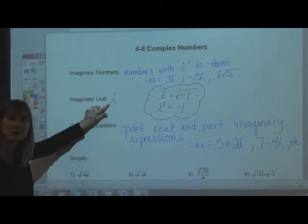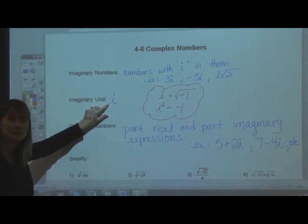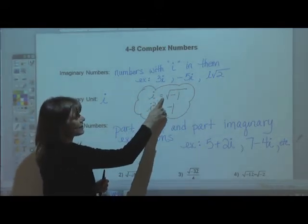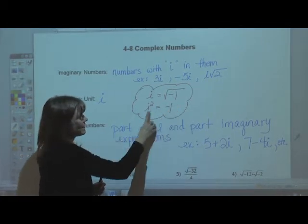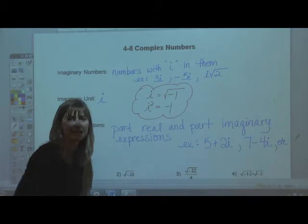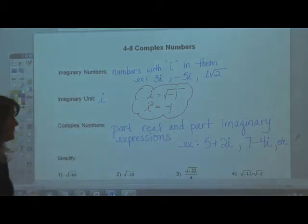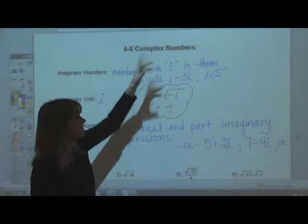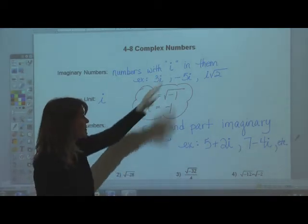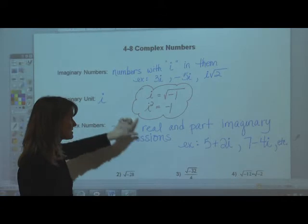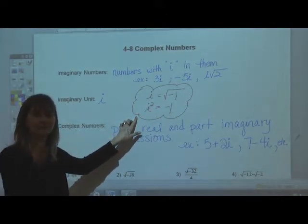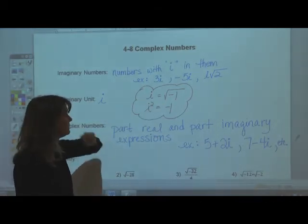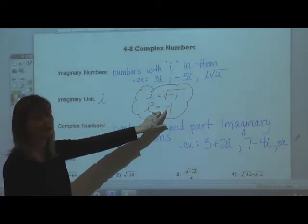The imaginary unit is just the letter i. Now i means two things and you want to commit these to memory: i equals the square root of negative 1, and i squared is equal to negative 1. It's just easier if you commit that to memory. Imaginary numbers are numbers with i in them. The i gets there because negative 1 under a radical becomes i, and i squared equals negative 1.